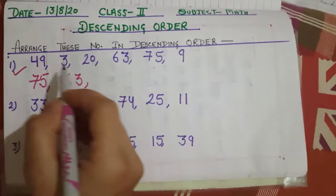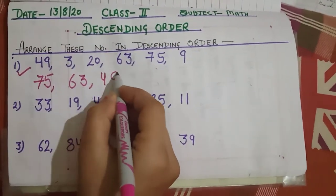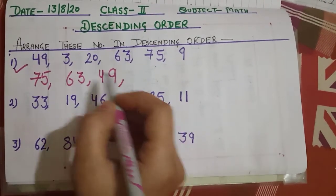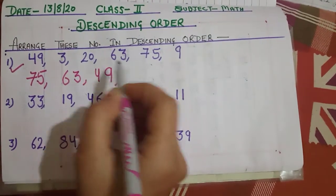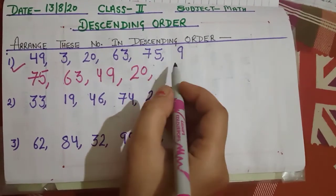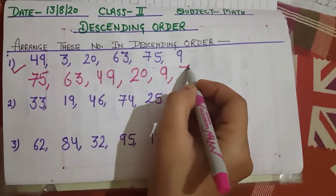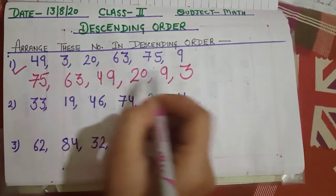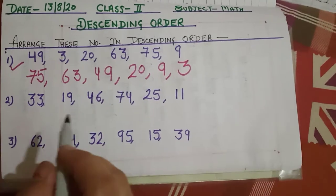Then after 63, yes, 49. And which number will come after 49? 20. Then after 20? Yes, 9. And the last number is 3. So students, greatest to the smallest number. Bade se chote ki or ja raha hai. Descending order.